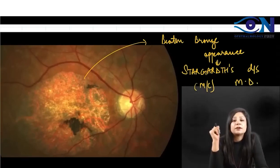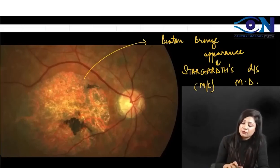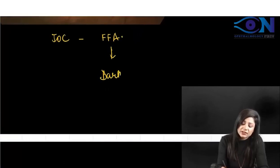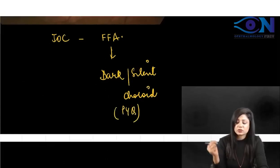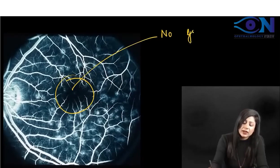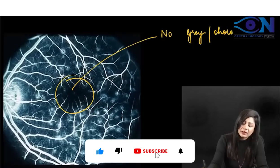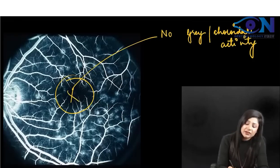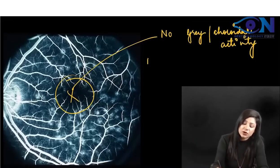The investigation of choice in Best disease was EOG, while in Stargardt disease the investigation of choice is FFA. On FFA you get a typical sign called the dark choroid or silent choroid. This is an important previous year question — there was an image-based question asking where you get this sign. You get it in Stargardt disease on FFA. You can see the blackish area, meaning no choroidal activity, because choroidal activity normally appears as gray color.